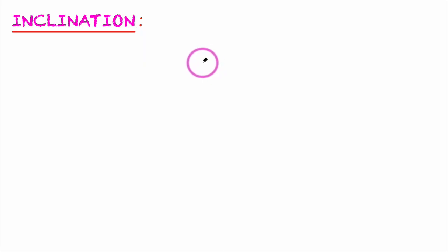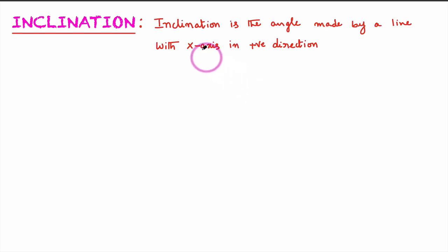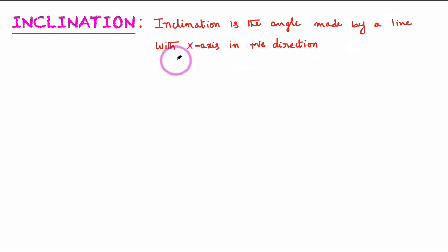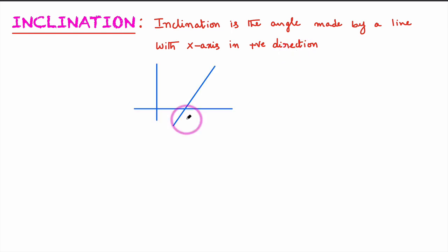In this class we will learn about inclination. What is inclination? Inclination is the angle made by a straight line with the x-axis in the positive direction. We'll try to understand this with a few examples.